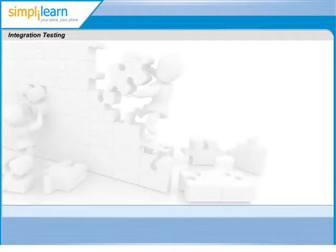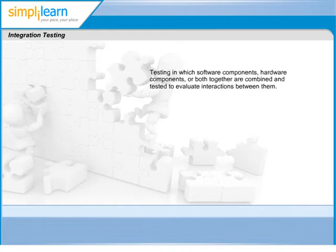Once components have been tested individually, these are then integrated together and tested. This is called integration testing. In this form of testing, software components, hardware components, or both together, are combined and tested to evaluate interactions between them.